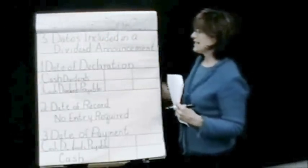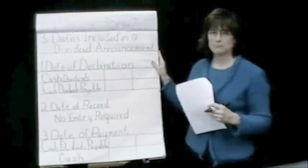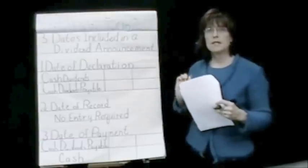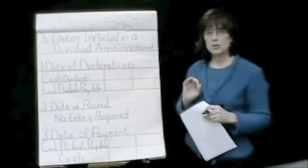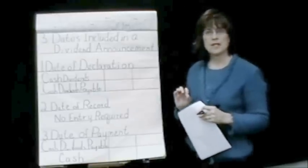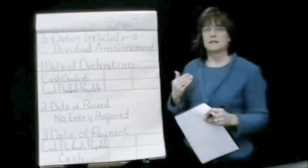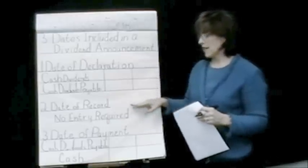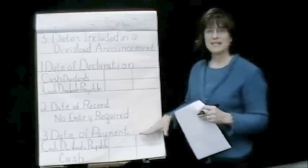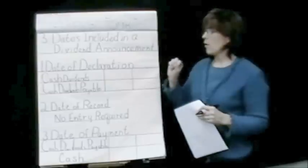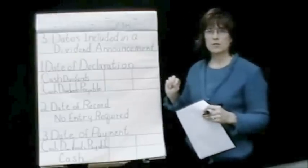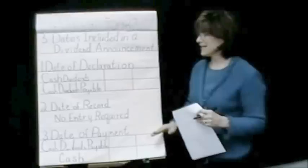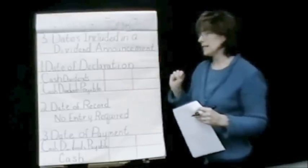Now we're going to talk about dividends — a dividend announcement. Dividends must be declared by the board of directors in a corporation. There are three important dates included in a dividend announcement: the date of declaration, the date of record, and the date of payment. What kind of entries do we need to make on our books for these three different dates?